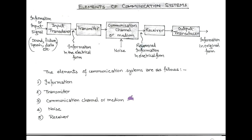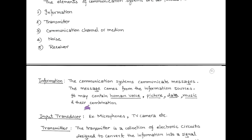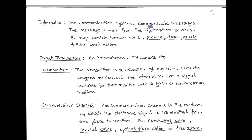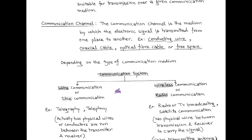The communication system communicates messages, and the messages come from information sources — for example, human voice, picture, data, music, and their combination. These messages pass through an input transducer. The input transducer may be a microphone, TV camera, etc. After converting messages into electrical form, they are transmitted via the transmitter. The transmitter is a collection of electronic circuits designed to convert messages into a suitable form that can pass through a communication medium.